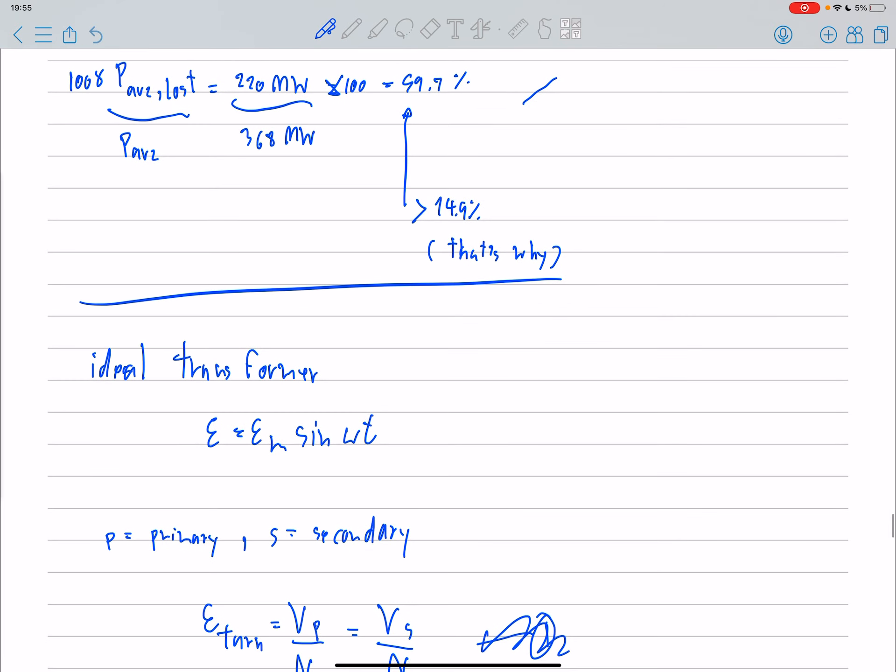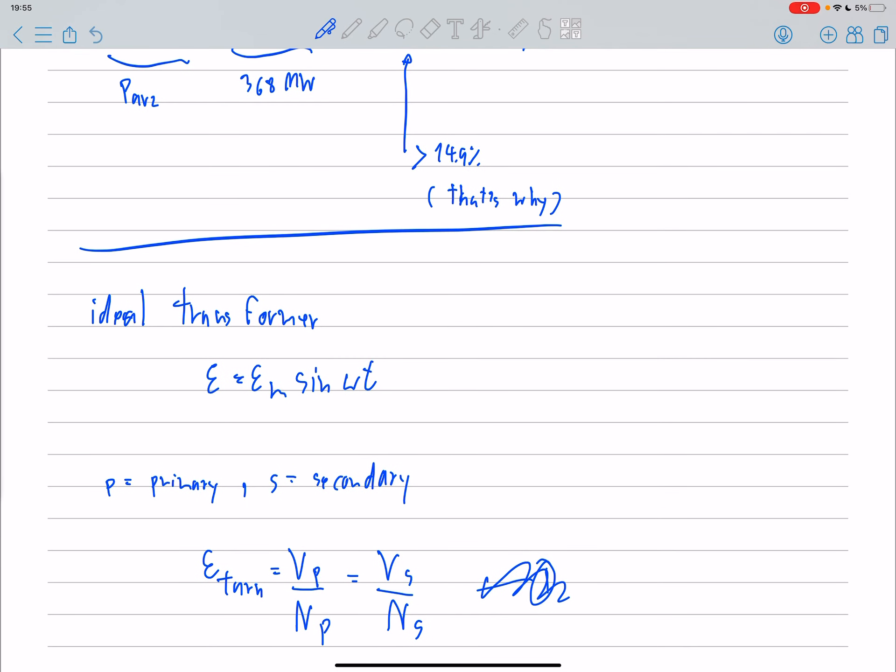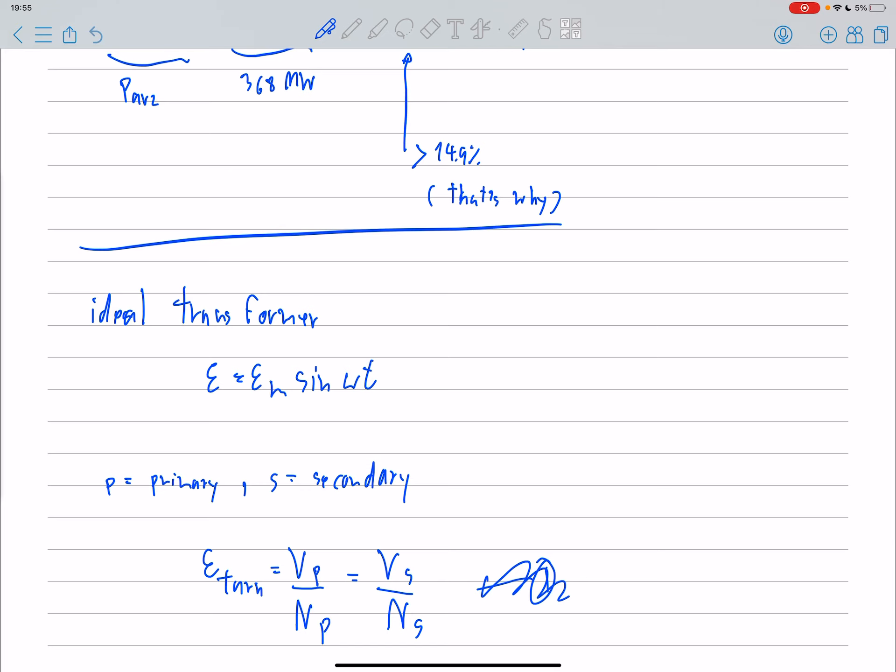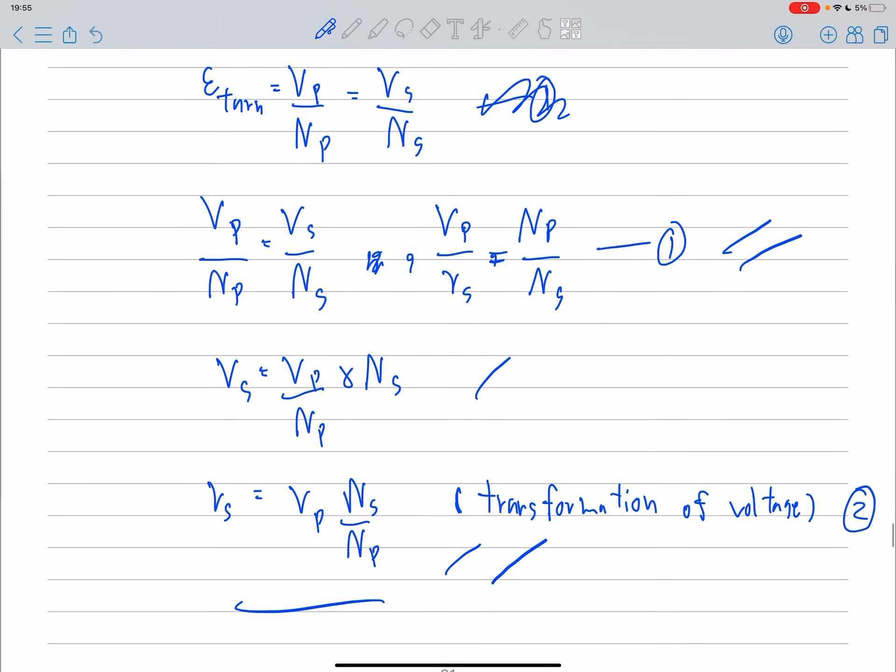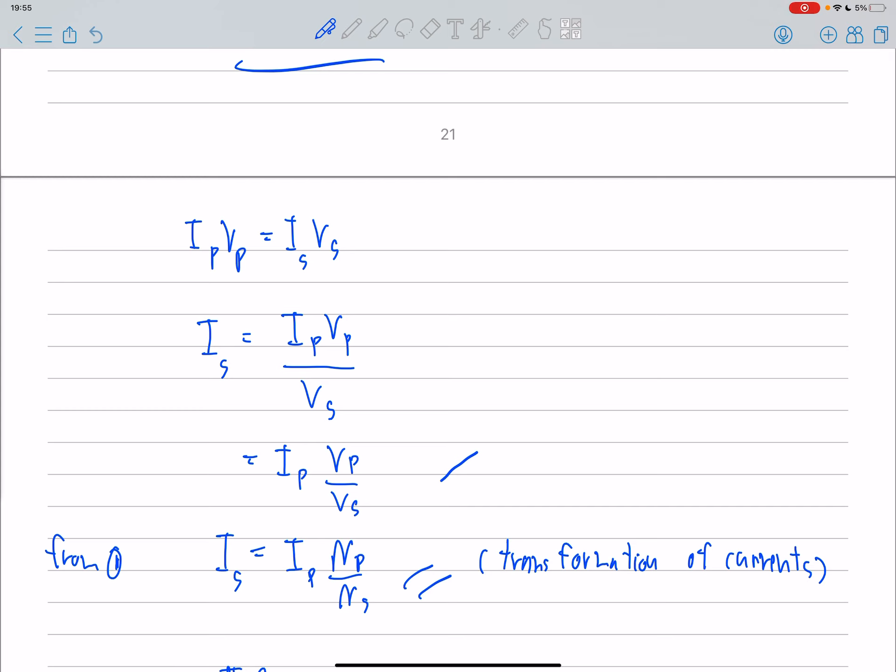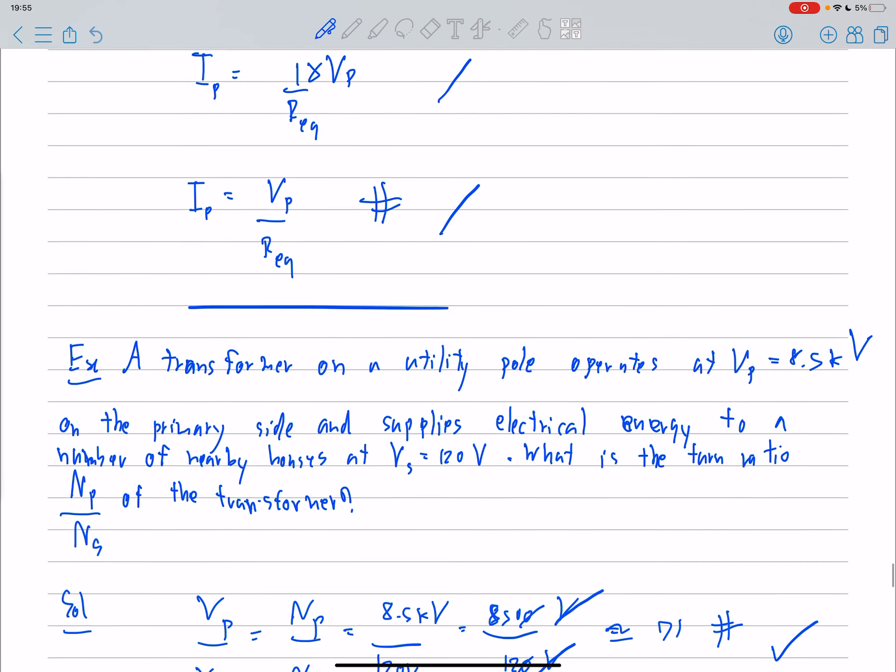So the ideal transformer is EMF equal to EMF sub M psi omega t, and P is primary and S is secondary. So we can use this equation to know the relation between V and N. This is equation one. Finally, we will have equation two: the transformation of voltage. And we will also have transformation of currents.